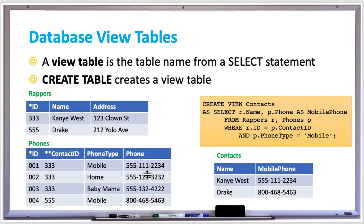In this contacts view table, the only rows we're going to see are Kanye West and Drake, because they're the only ones that have mobile phones listed in the phones table. You'll see their phone numbers and names listed in this new view table.